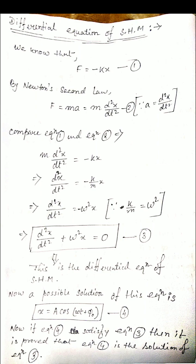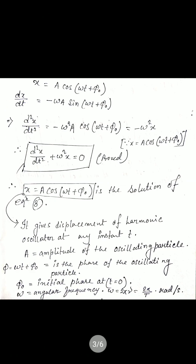To verify this is the correct solution, we differentiate equation 4 and check whether it satisfies equation 3. If we find the first and second order derivatives of x equals A cos(ωt + φ₀) and the result satisfies the differential equation, then we can confirm equation 4 is indeed a solution.